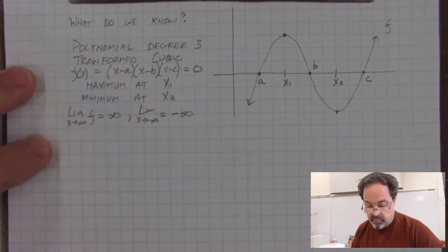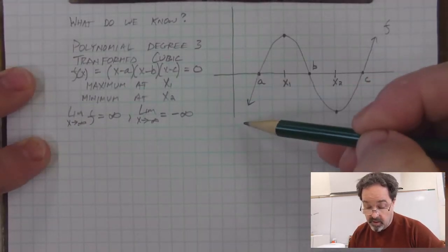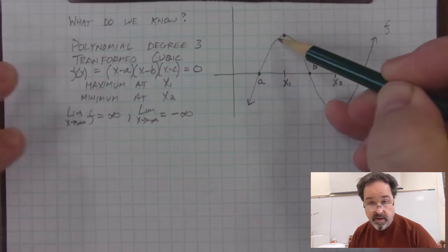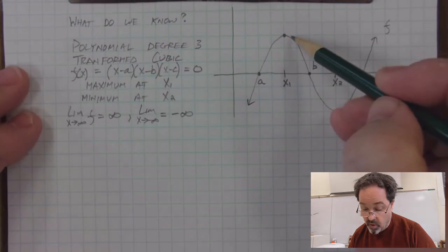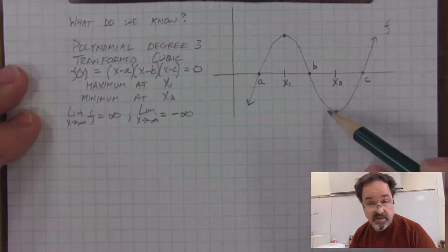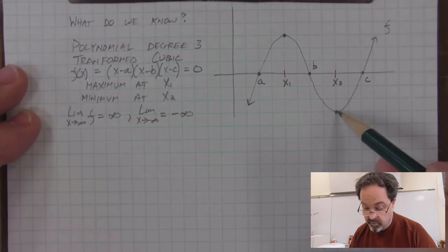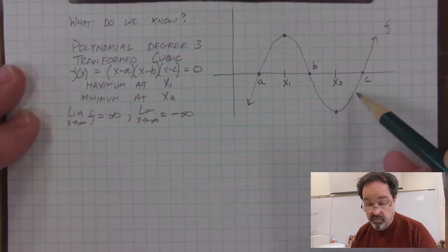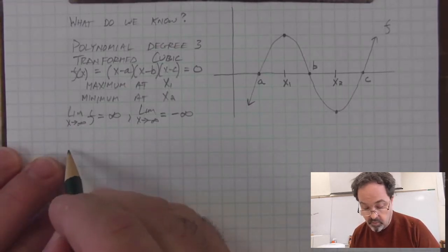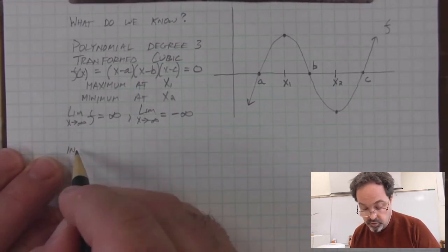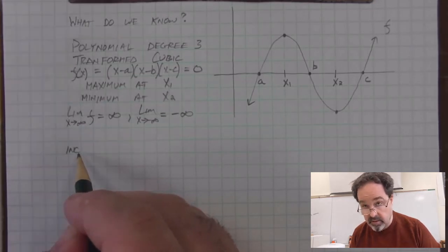We could also say that the function is going up here. The values are increasing. And then the values of the function are going down, or decreasing. And once we reach this point, the function values increase again. Those two terms, increasing and decreasing, are descriptions of function behavior. And we often show where a function is increasing and decreasing in interval notation.